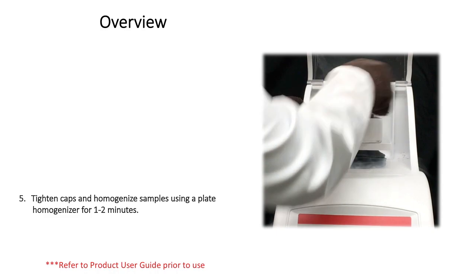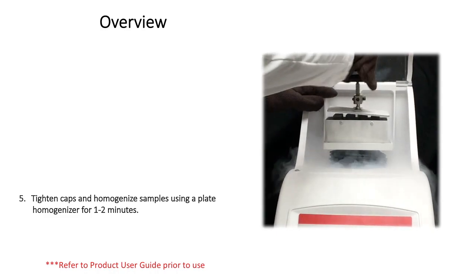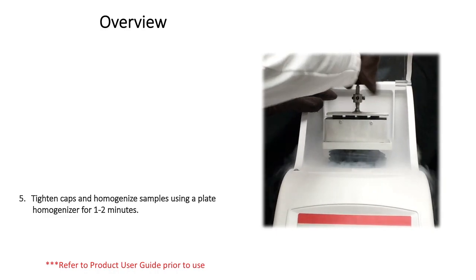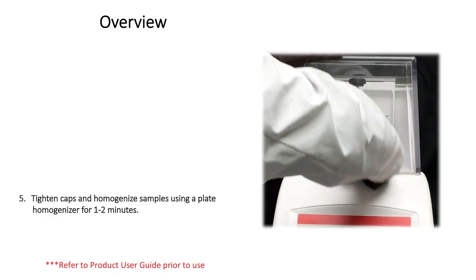Tighten the caps and secure the AC block in a high velocity plate homogenizer. Homogenize samples for 1-2 minutes at 1200-1500 RPM.